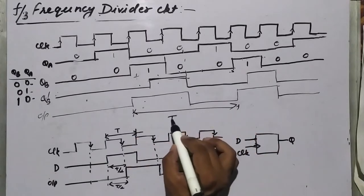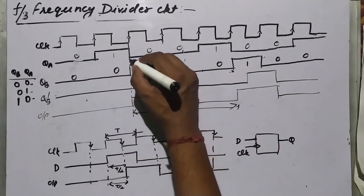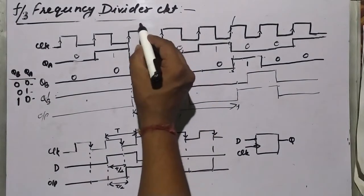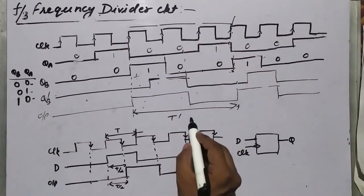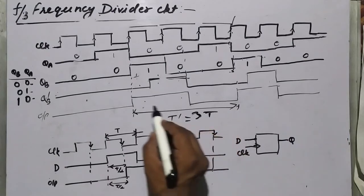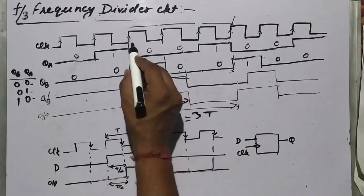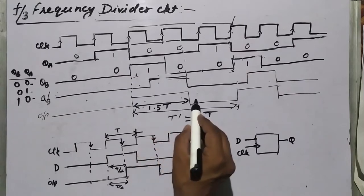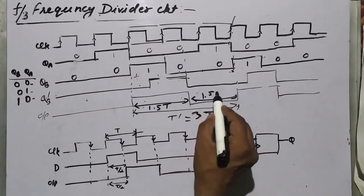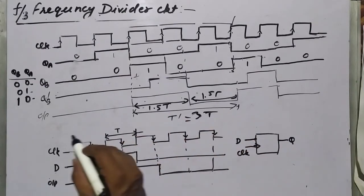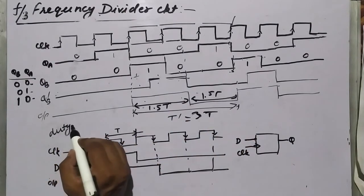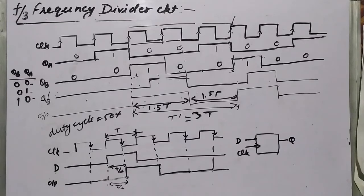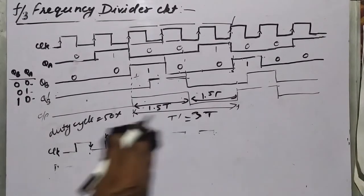Checking the new time period: T-dash still equals 3T. Now T_on equals T plus 0.5T, which is 1.5T, and T_off also equals 1.5T. Therefore the duty cycle equals 50%. Our problem of achieving both F/3 frequency division and 50% duty cycle is solved.